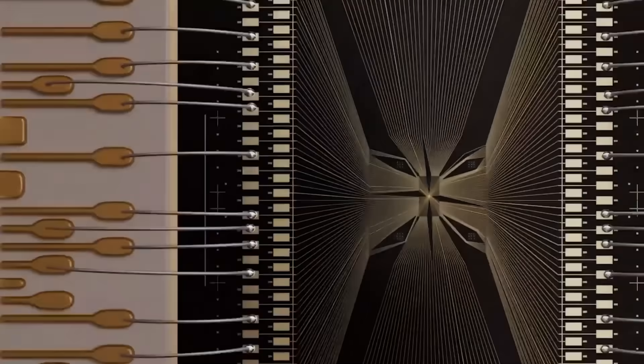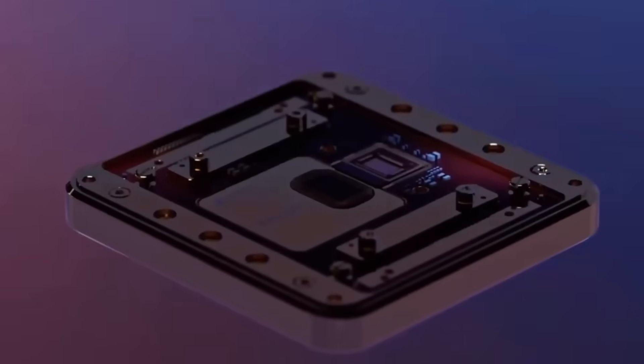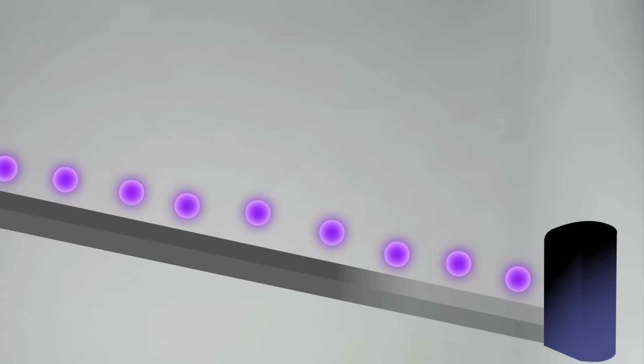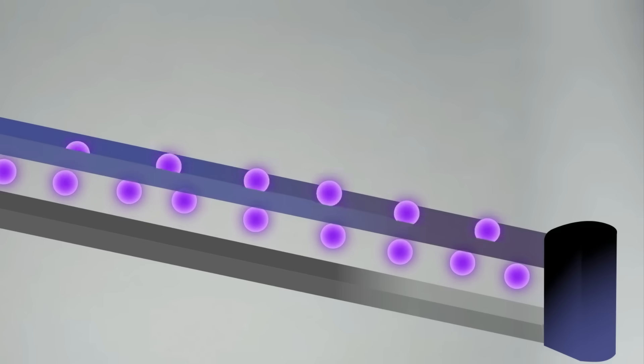While Google and IBM battle quantum errors with complex correction schemes, Microsoft took a radically different path. They built qubits that are inherently protected by the topology of space itself.